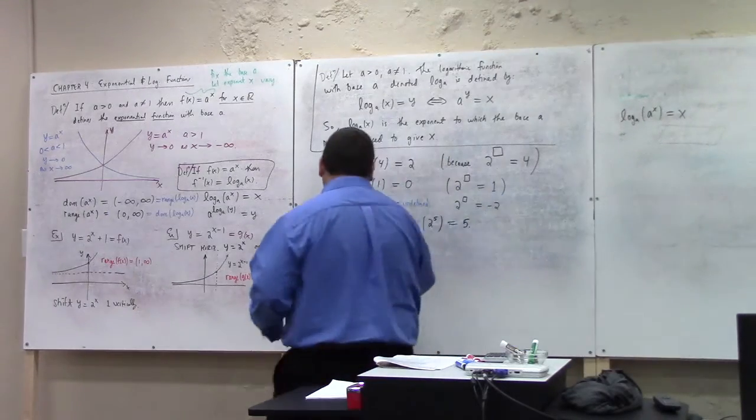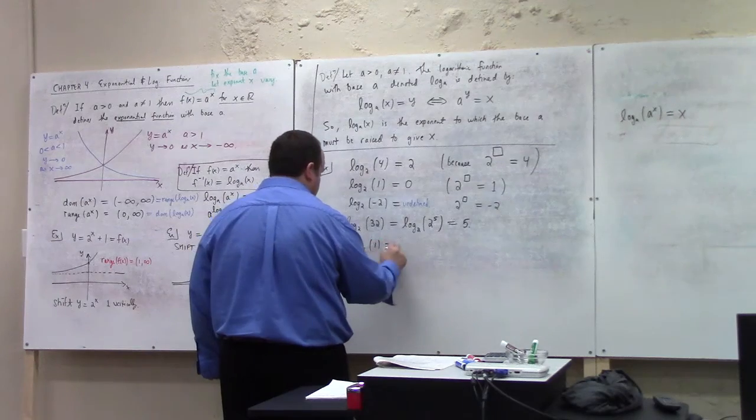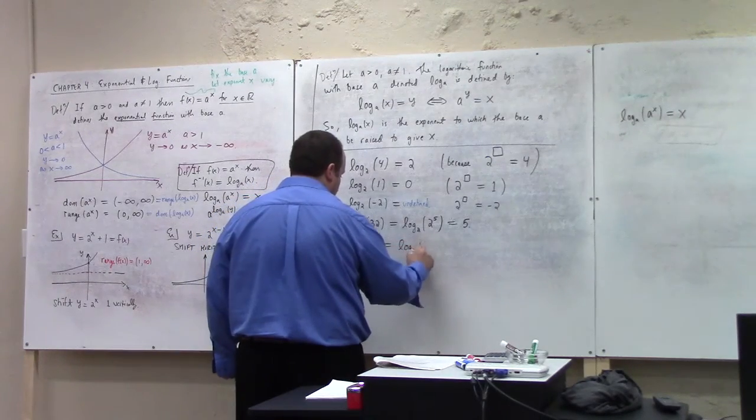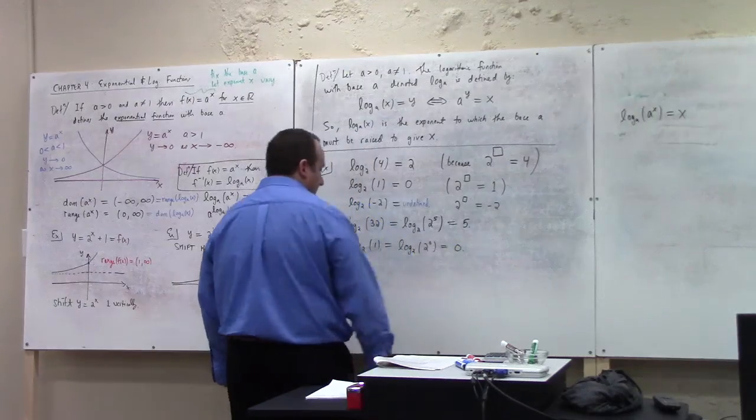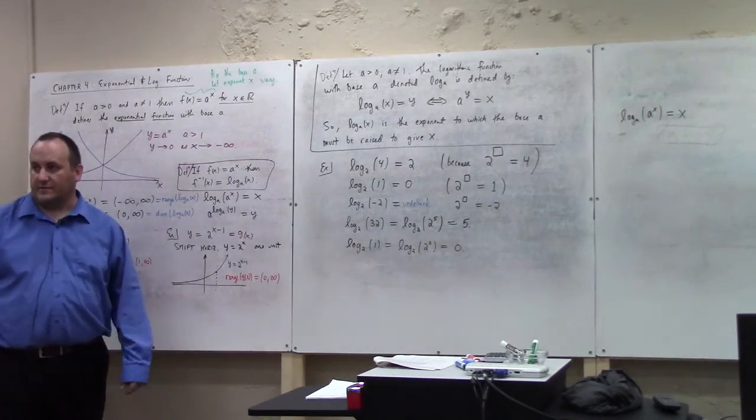And we could go back and do the other ones that way too. Like log base 2 of 1 is log base 2 of 2 to the 0 which is 0. I mean this is a method you can use to directly calculate logarithms.